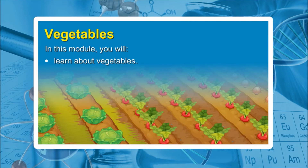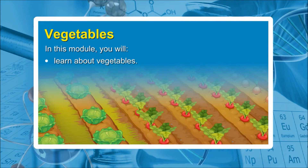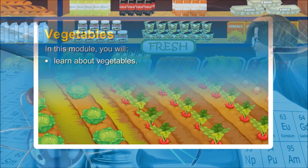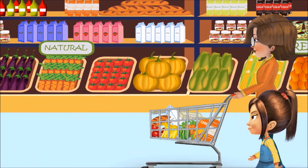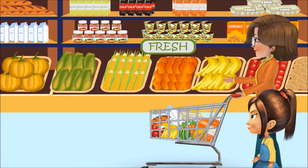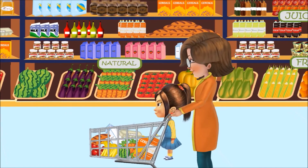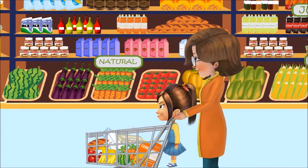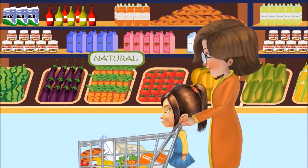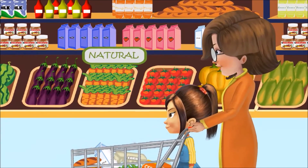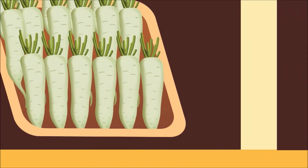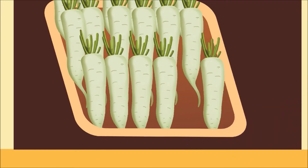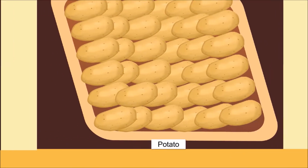Vegetables. In this module you will learn about vegetables. Alicia has come to a supermarket with her mother. They are buying a lot of groceries. Look, they are standing at a vegetable corner. Let us see which vegetables they are picking up. They have chosen carrots, radish, and potatoes.